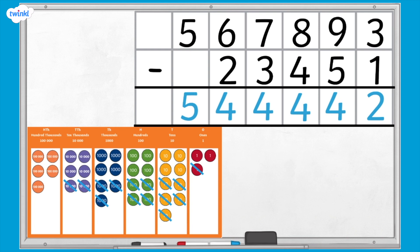Our answer is 544,442. Does your column subtraction answer match the place value counters left on the grid?